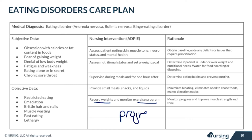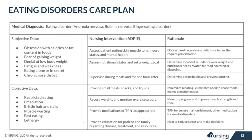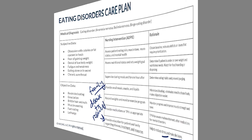Record weights and monitor their exercise program to track progress and improve muscle strength and tone as caloric intake increases. Provide medications and TPN as appropriate — TPN for severe malnourishment, and other medications for any coexisting mental disorders along with therapy. Provide education for the patient and the family about the disease, treatment, and resources to help reduce stress and support decision-making.